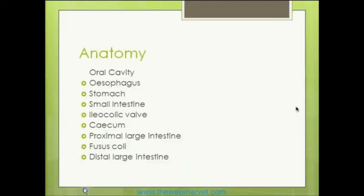The anatomy of the rabbit GIT is very similar in some ways to more familiar species — we have the oral cavity, esophagus, stomach, and small intestine. Then it becomes more complex, as it's really an evolutionary strategy to deal with a poor diet. After the small intestine we have the ileocolic valve, which is very important in the production of cecotrophs. Then the massively important cecum — about a third of gut volume — the proximal large intestine, the hormonally controlled fused colon that controls gut motility and what is produced at what time of day, and finally the distal large intestine, whose function is very similar to the colon in other species.